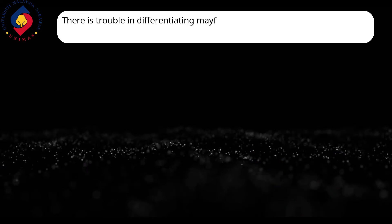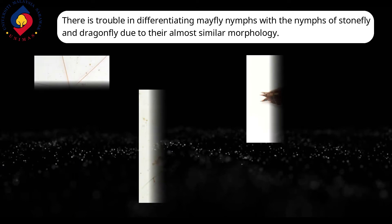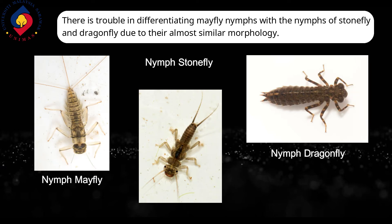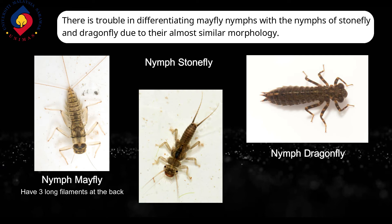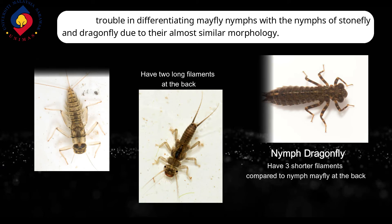Most people have trouble differentiating the mayfly nymph from the nymphs of stonefly and dragonfly due to their almost similar morphology. Here is an easy way to differentiate them: the nymph mayfly has 3 long filaments at the back, the nymph stonefly has 2 long filaments at the back, and the nymph dragonfly has 3 short filaments at the back compared to the mayfly.